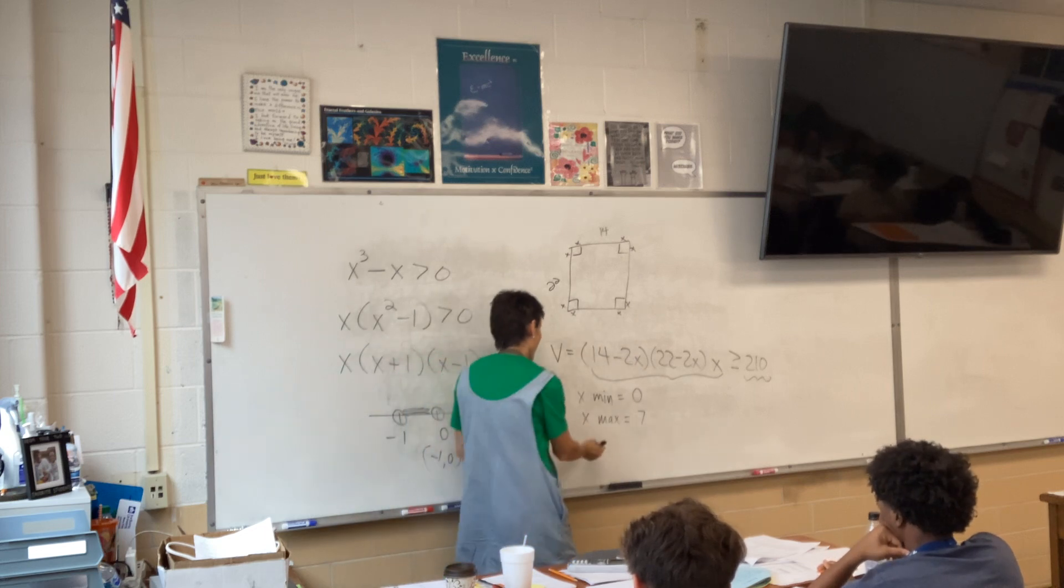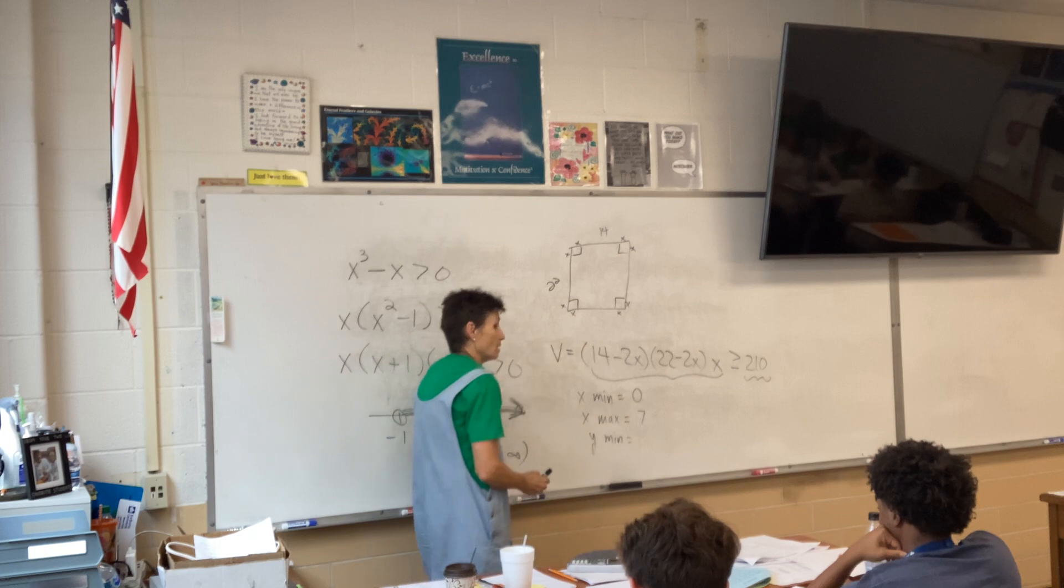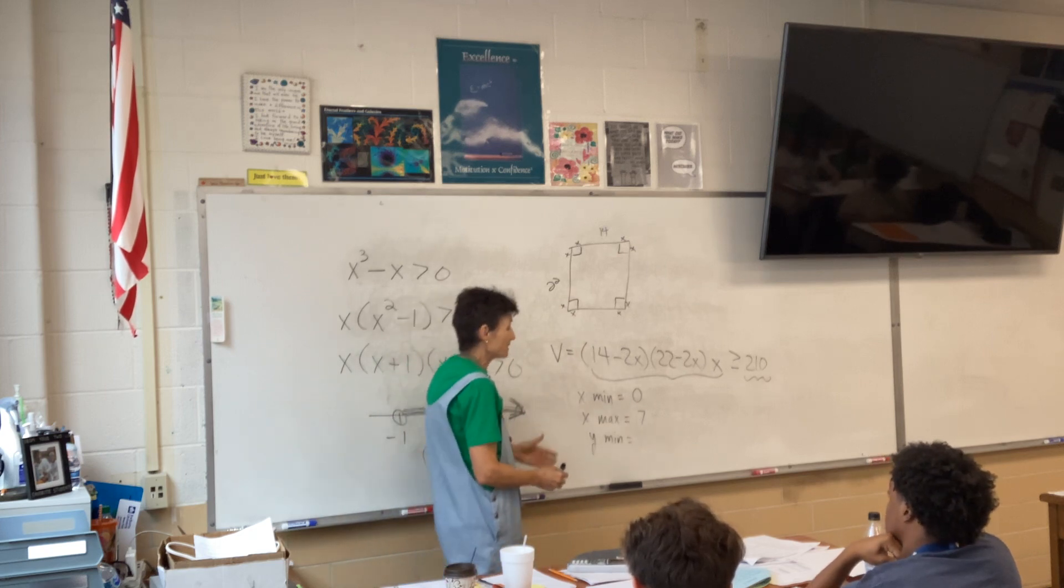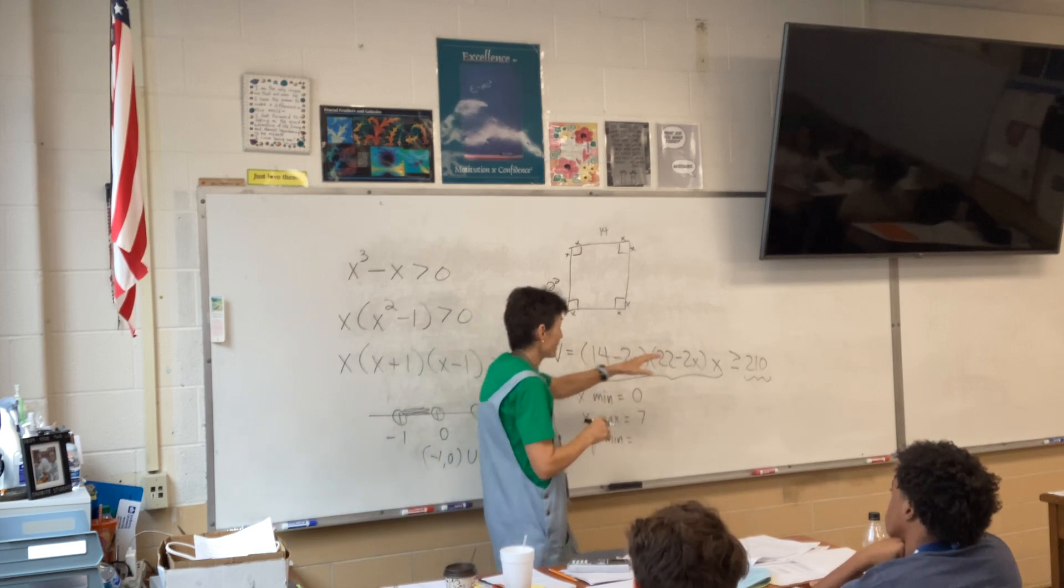So, your X min is zero. Your X max is seven. The smallest dimension is 14. You cannot take off more than half of 14. Right? Okay. Now, what about our Y's? Minimum to zero.